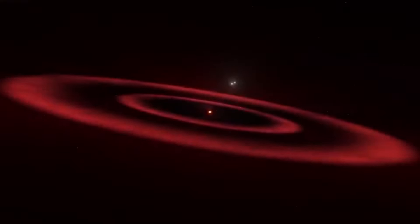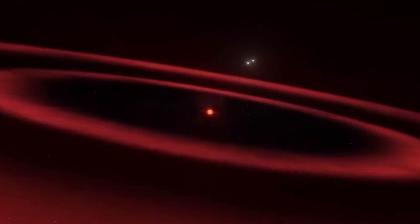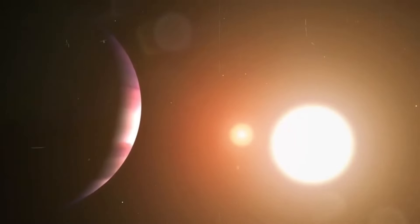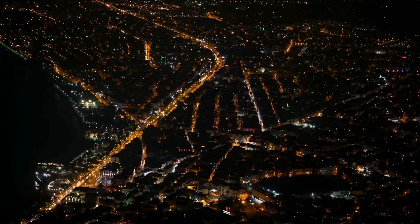Amidst its planets, Proxima b stands out with strange artificial lights, leaving the scientific community baffled and intrigued. Could this be the long-awaited evidence of intelligent life beyond our solar system?